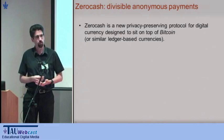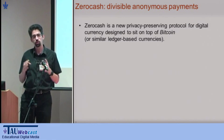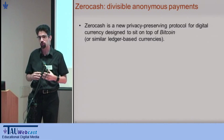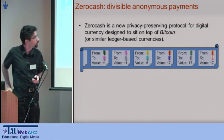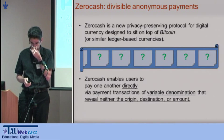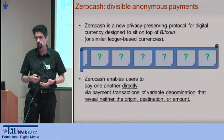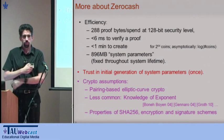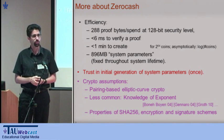In the work I'm presenting, we address this problem and present a system called ZeroCash, which provides divisible anonymous payments. ZeroCash is a new protocol that can sit on top of Bitcoin, or you can deploy it as a variant of Bitcoin. Essentially what it does is take that blockchain and anonymize it. There are still transactions in the blockchain, but to an outsider they look just like a bunch of pseudorandom values — the value, origin, destination, and timing are all hidden.